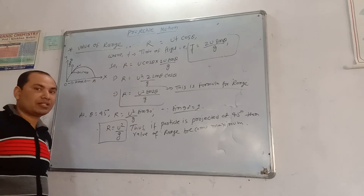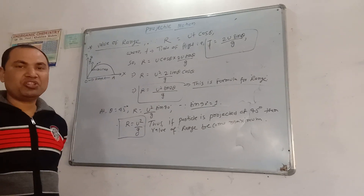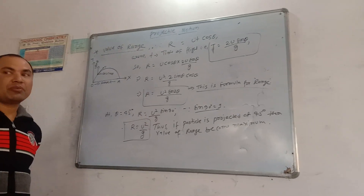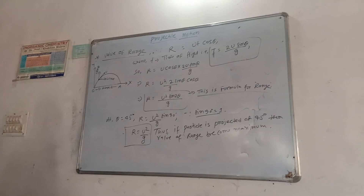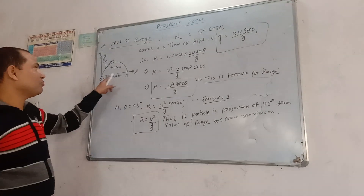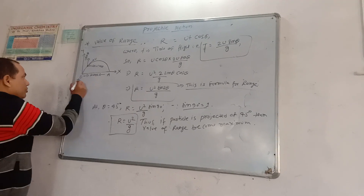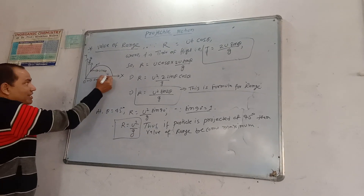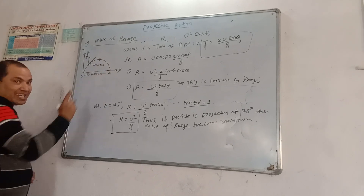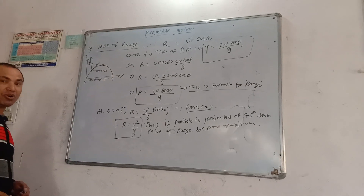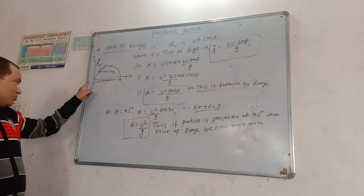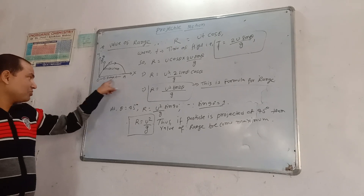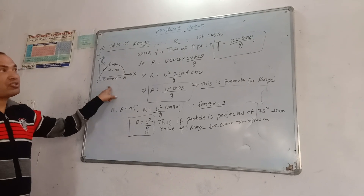I am going to teach you range. In the previous video I have taught you range. It is the total distance covered by the particle — the distance between the initial point and the final point. Here O is the initial point and A is the final point, where the particle has finally fallen down. So the total distance between the initial point and the final point is called range.